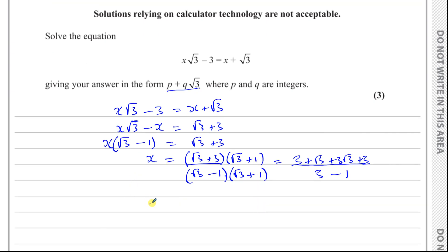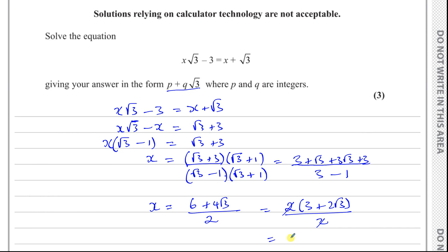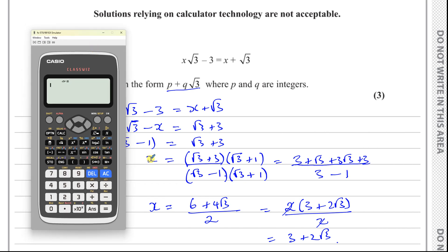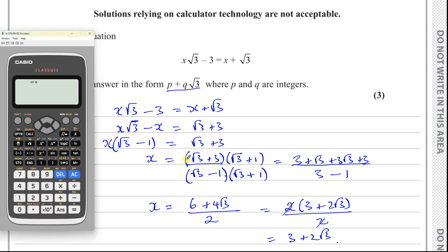So simplifying: the numerator is 3 plus 3 which is 6, plus 3 root 3 plus root 3 which is 4 root 3, all over 2. Taking out a common factor of 2, we get (3 plus 2 root 3) over 1, giving a final answer of 3 plus 2 root 3.